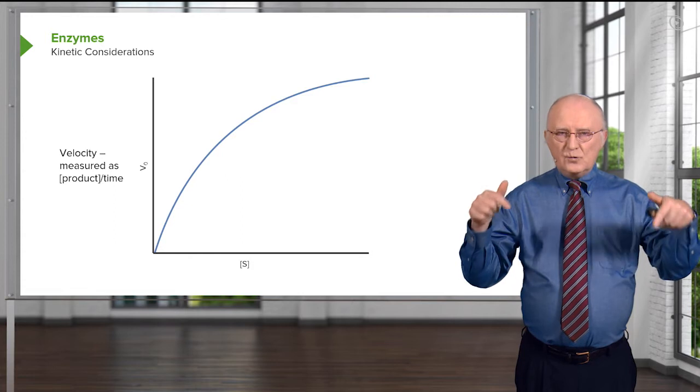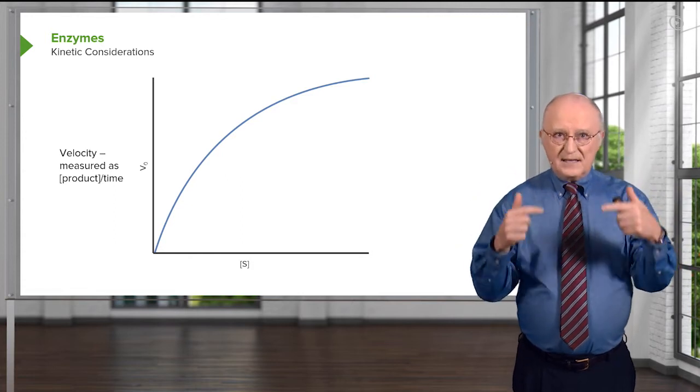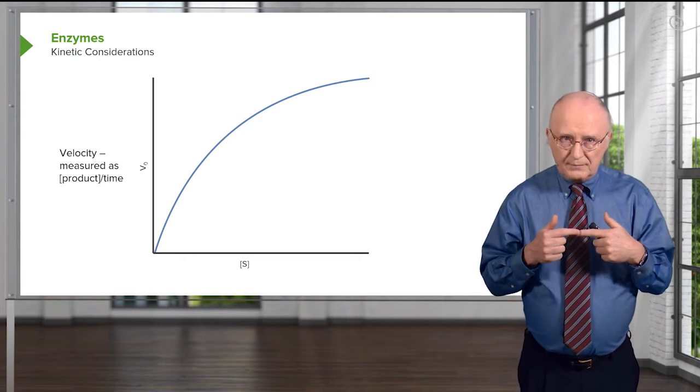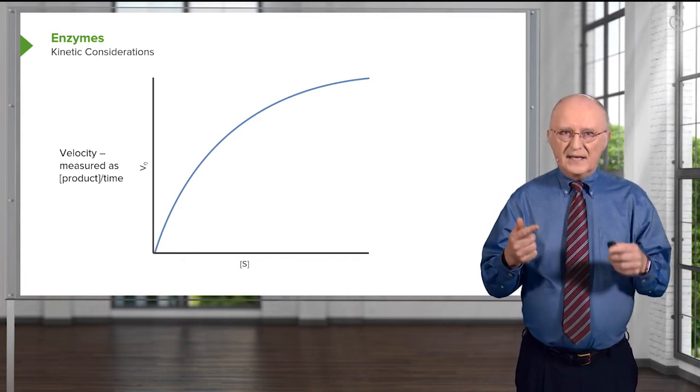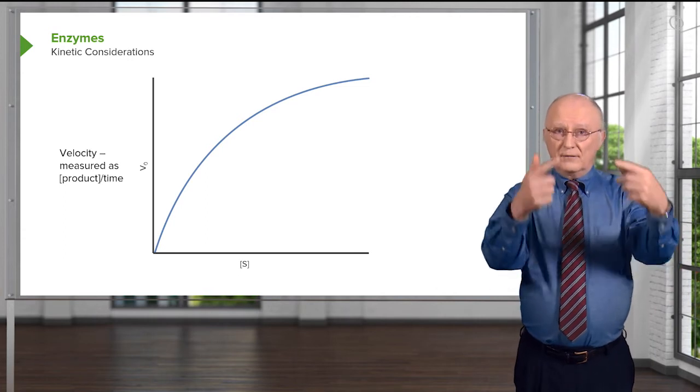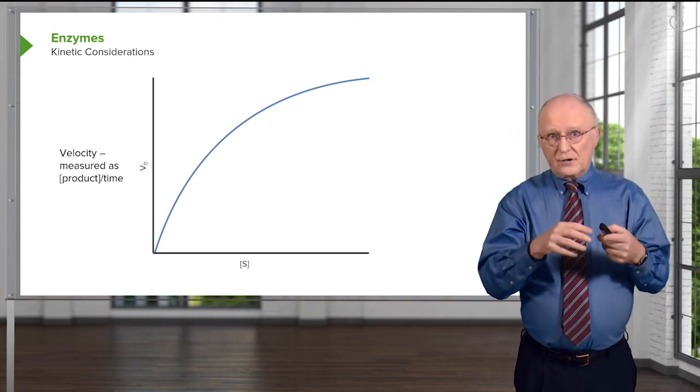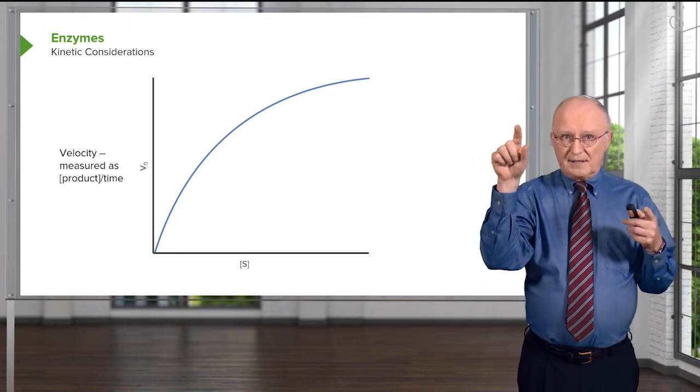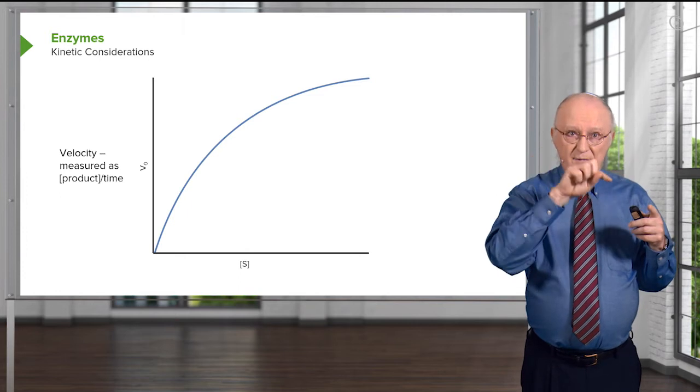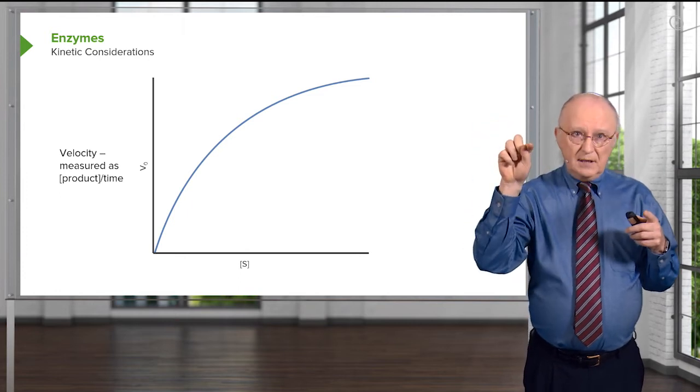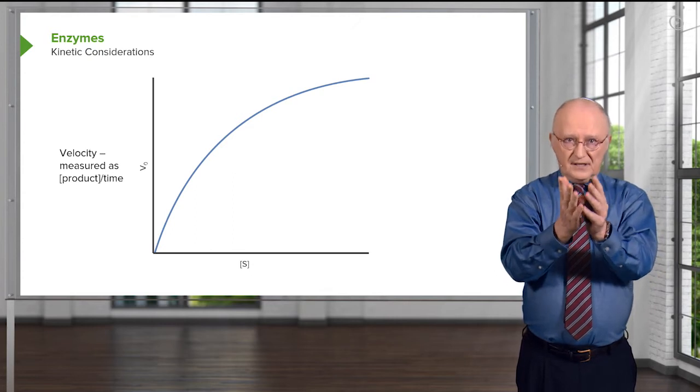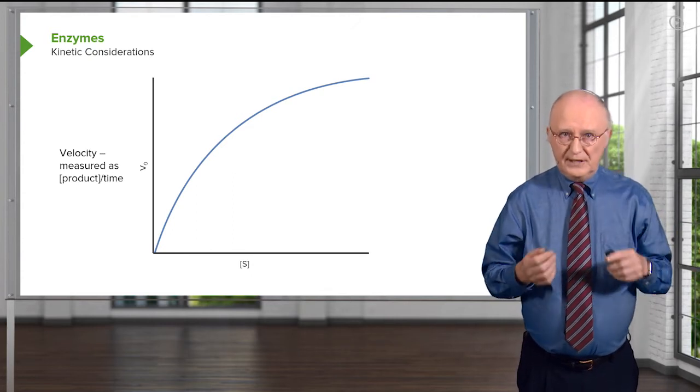I take and I let each one react for an exact same time, and then I measure the amount of product. So by doing that, I can see the effect of changing substrate on the velocity, and then I plot it. So what you see on the screen is the sum of those plots. That is, each point on that dot came from a series of reactions that I did, and each one of those individual reactions had a specific substrate concentration and a specific velocity that was reached.